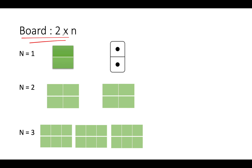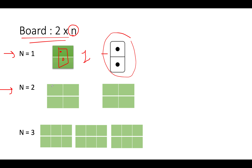The board size given to us is 2×n, where n is the number of columns. Let's go case by case. For n=1, using the domino tile, there is only one way — you place the domino tile vertically. For n=2, the grid is 2×2. You can use two tiles vertically for the first way, or place the tiles horizontally for the second way. So there are two ways to completely cover this grid, and the answer becomes 2.